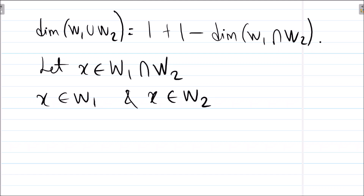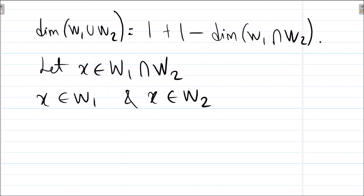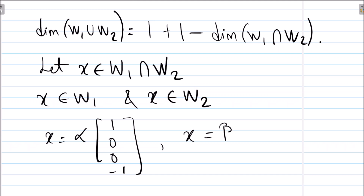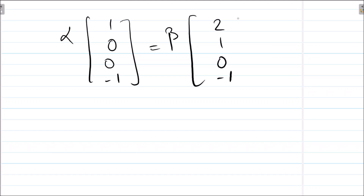Let x belong to W1 ∩ W2, meaning x is in both W1 and W2. Since x is in W1, it is some scalar α times the vector (1, 0, 0, −1). Since x is in W2, it is some scalar β times the vector (2, 1, 0, −1). Setting these equal: α(1, 0, 0, −1) = β(2, 1, 0, −1).